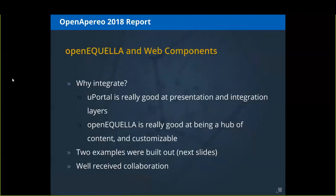Digging into that last presentation, it really centered around using OpenAquella to do what it's really good at — being a hub of content — allow it to be customizable, and integrate with another open source project. We have deep experience with U-Portal, so that was a natural fit, as U-Portal is really good at presentation and integration across multiple components in an institution. We implemented the proof of concept using web components.